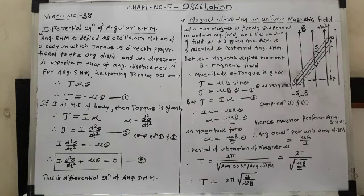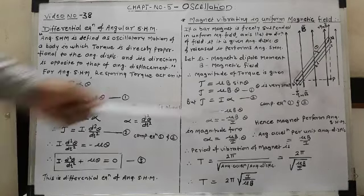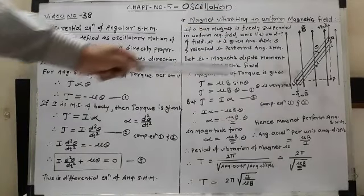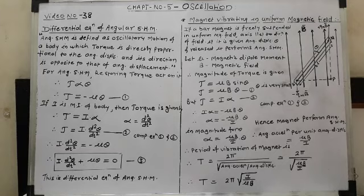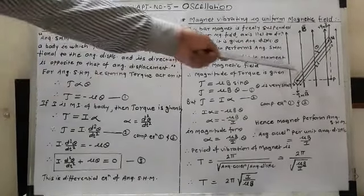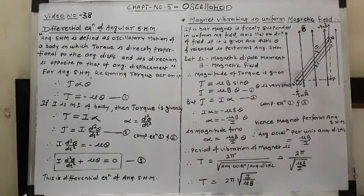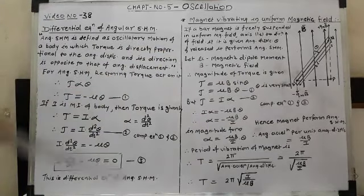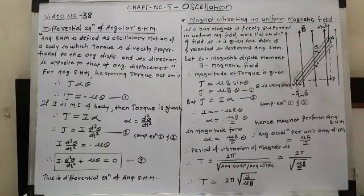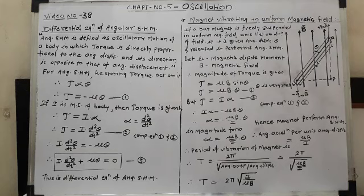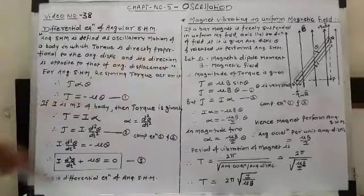On the basis of this differential equation of angular SHM, we now look at the magnet vibrating in a uniform magnetic field. Consider a bar magnet with N and S poles suspended with its axis parallel to the direction of a uniform magnetic field of induction B. If the bar magnet is given a small angular displacement θ and released, it oscillates and performs angular SHM. The magnitude of the torque acting on the bar magnet is given by τ = μB sinθ, where μ is the magnetic dipole moment and B is the magnetic field of induction.